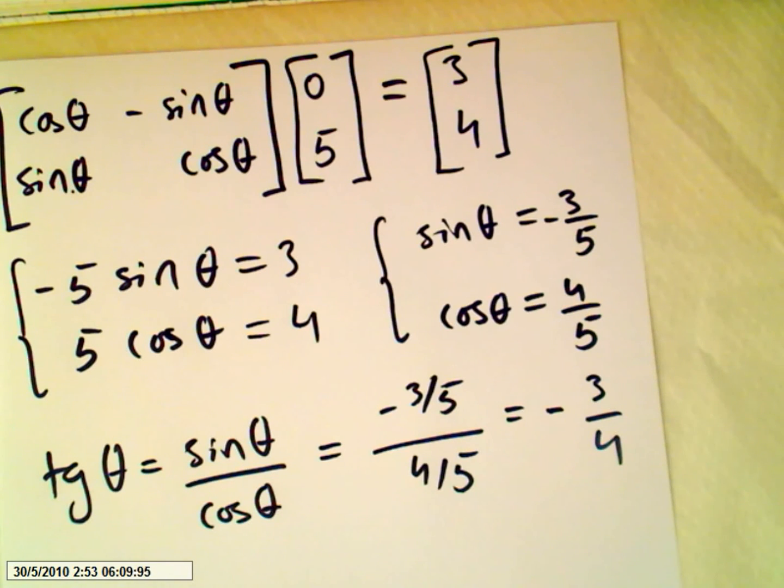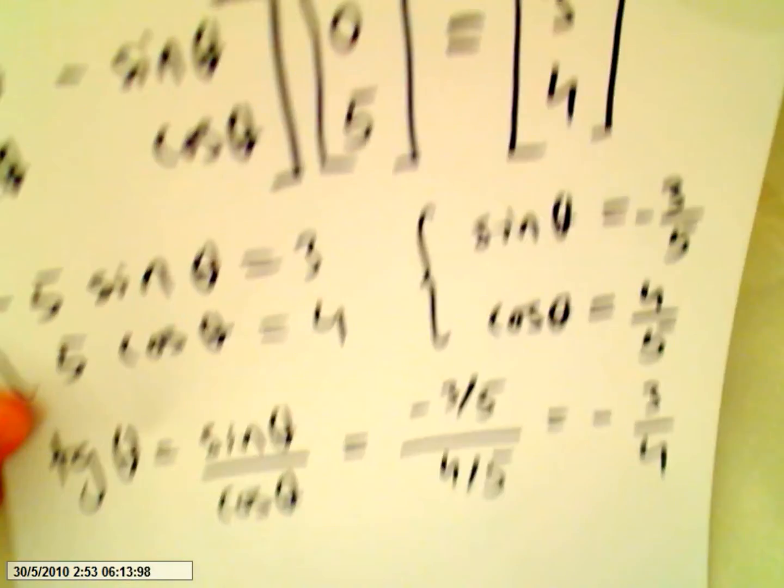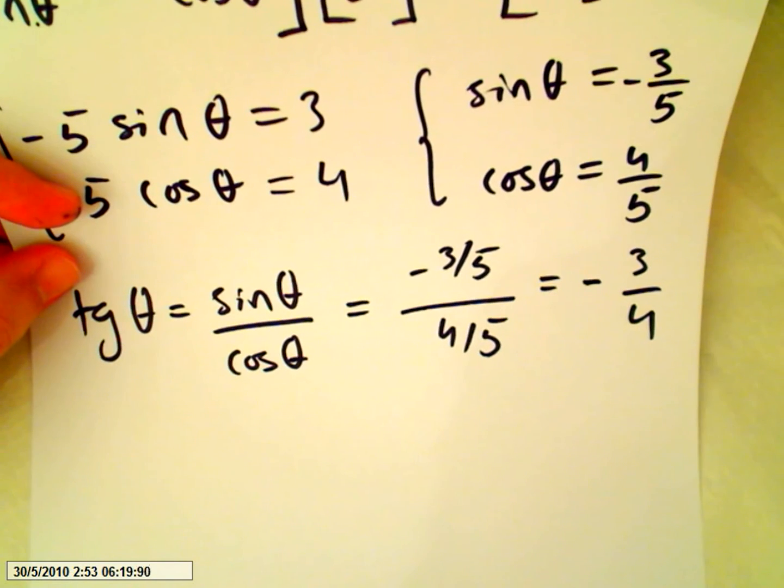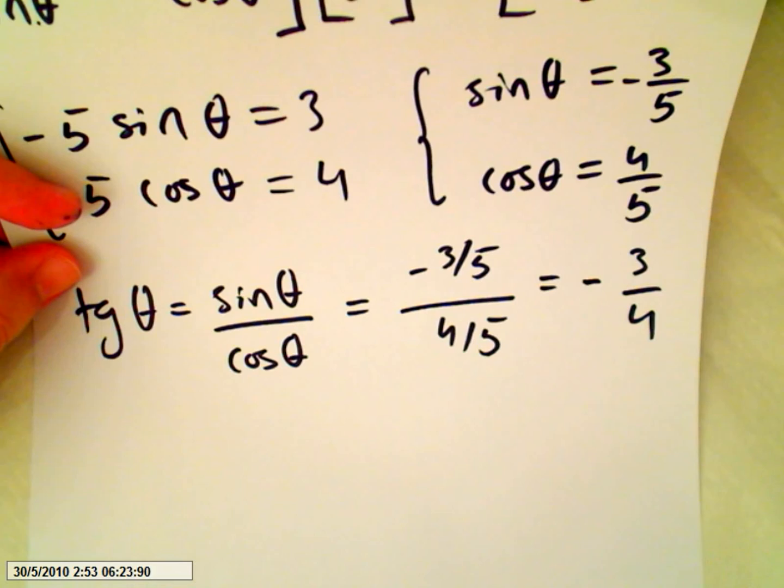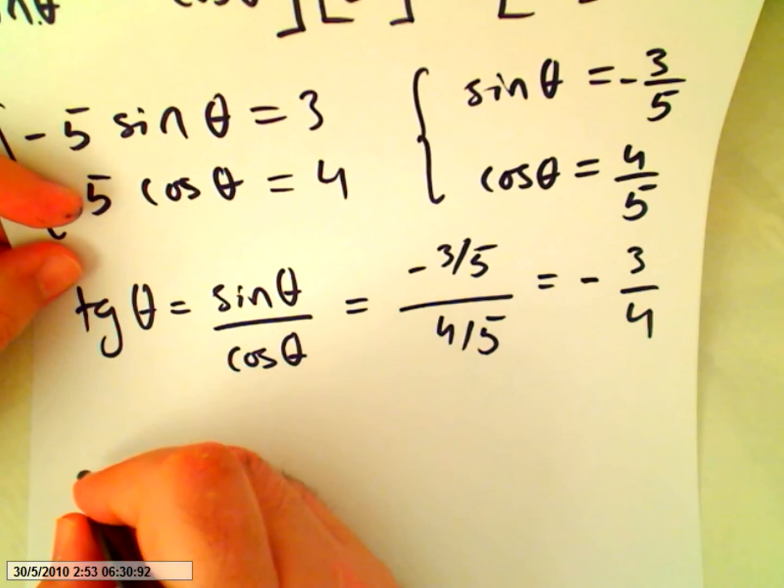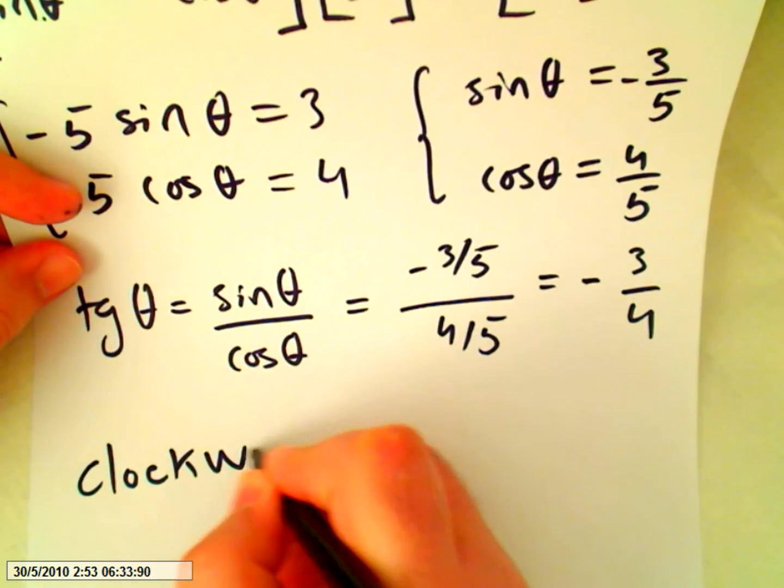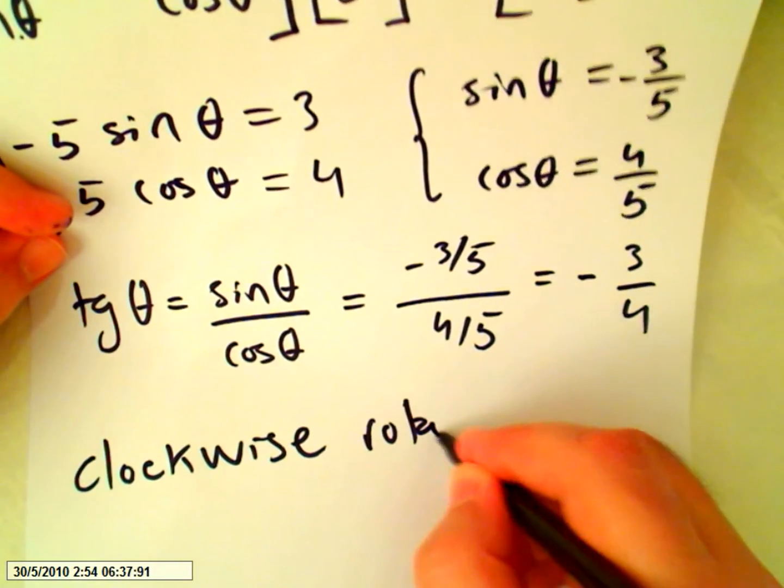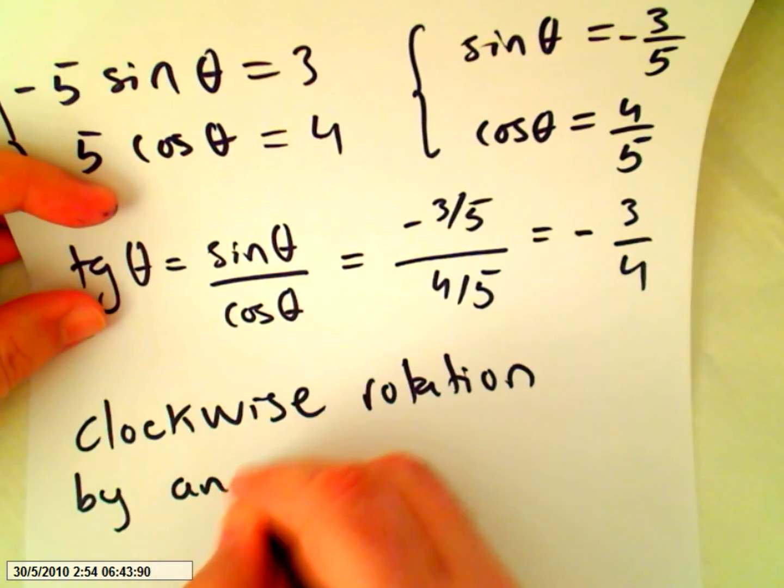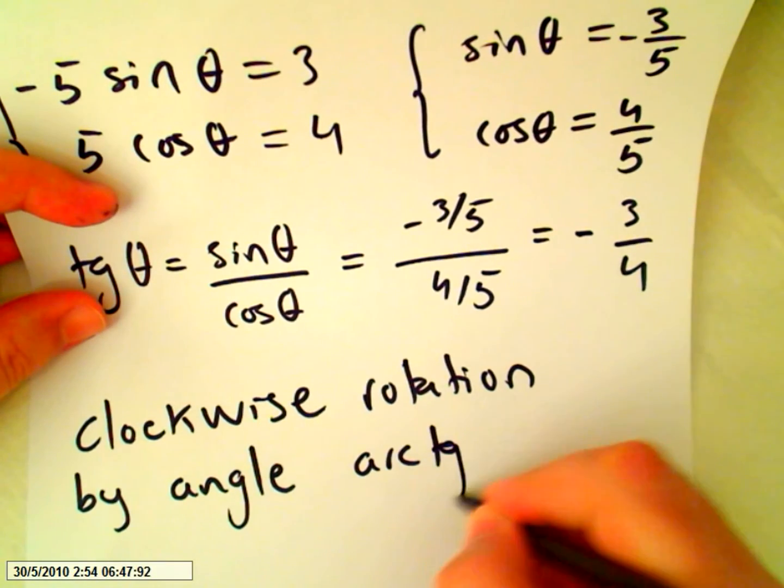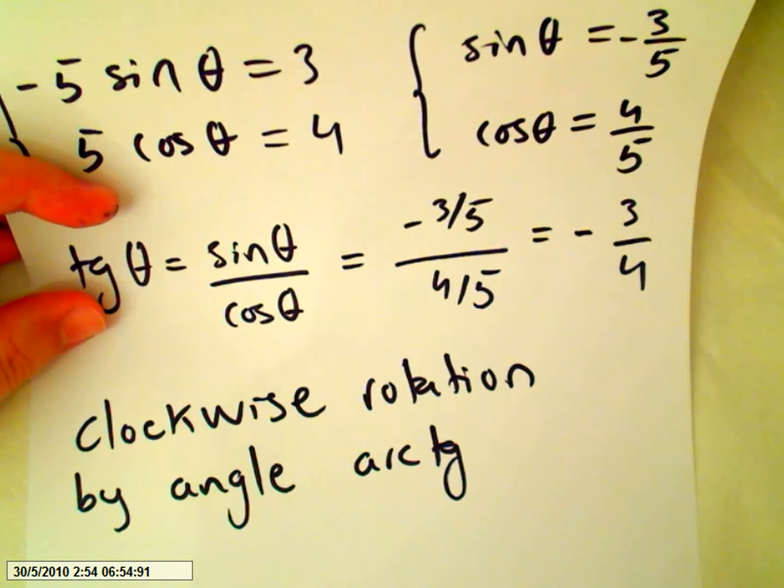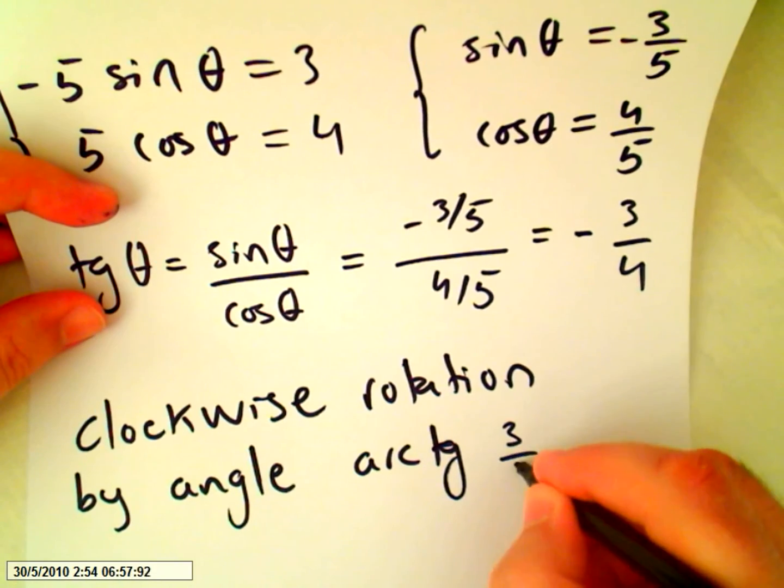So our final answer is, for the rotation, we are using anti-clockwise. Since we've got minus 3 over 4, we will say it's a clockwise rotation by angle arc tangent of minus 3 over 4 if it was anti-clockwise. We were finding it anti-clockwise, but we are giving the answer in clockwise, so it will be 3 over 4.